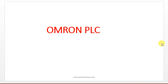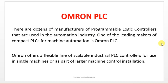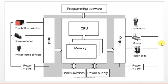It is a well-known brand in India also. There are dozens of manufacturers of PLC as we have seen in our previous sections. One of the leading makers of compact PLC for machine automation is Omron. Omron offers a flexible line of scalable industrial PLC controllers for use in single machines or as part of large machine control installations.